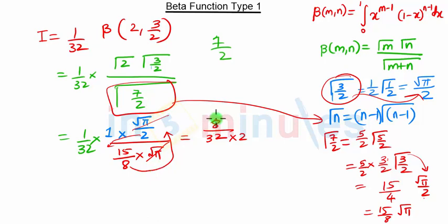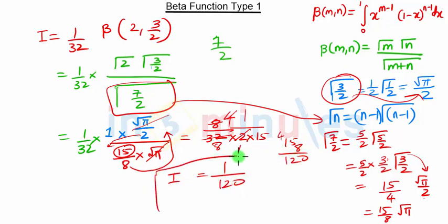So we have 8 upon 32 times 2, and here we have 15. 8 upon 64 times 15: 8 into 15 is 120. So our final answer is I equal to 1/120.